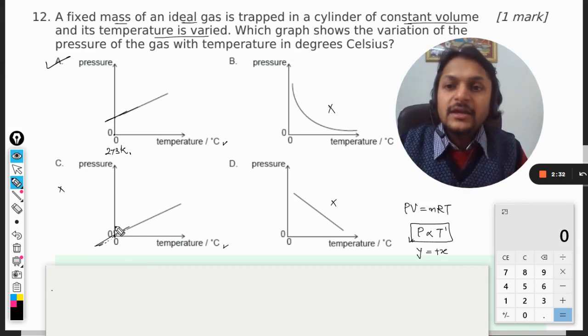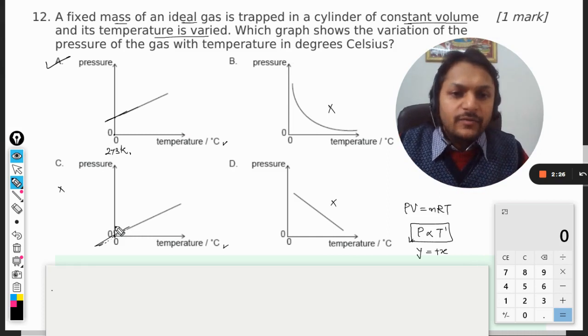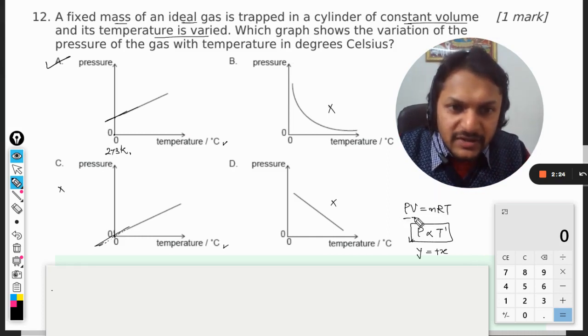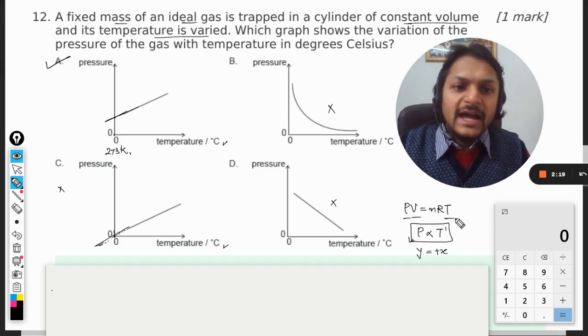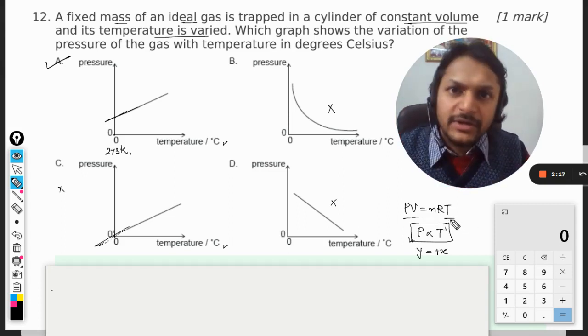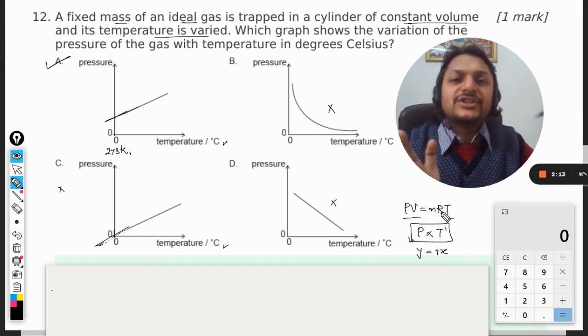That is why A will be the correct answer and C is wrong. I hope you understand - whenever we write these capital letters P, V, and T, they are in absolute terms. The scale has to start from zero. And if one thing becomes zero, everything becomes zero. So at absolute zero, volume of the gas is zero, pressure of the gas is zero.